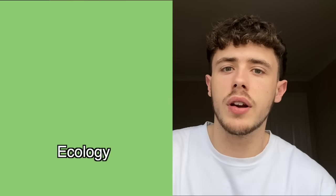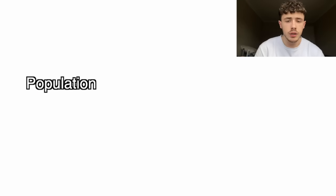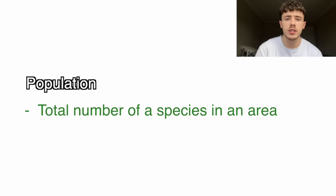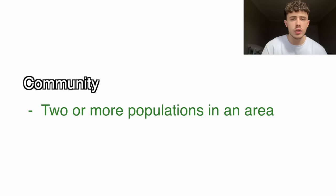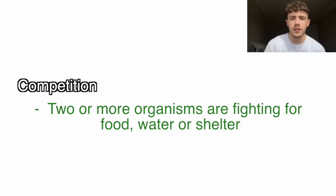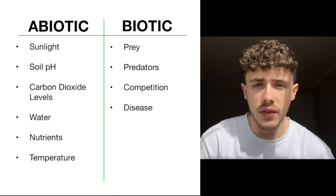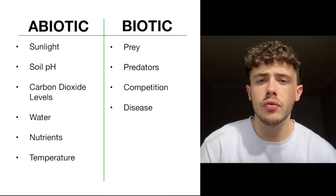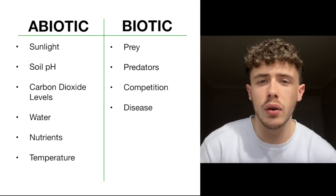On to our final topic, topic number three: ecology. Most of ecology is just definitions that you need to be familiar with. Once you know these definitions, take them to past papers and other questions to make sure you can answer them. Population is the total number of a species in a certain area. If you have two or more populations within the same area, that is called a community. Competition arises when two or more organisms are fighting for resources — this could be prey, food, water, or shelter. The things that organisms compete for can be split into two categories: abiotic and biotic factors. Here are some examples of each, and I would recommend trying to remember as many as you can because they do come up a lot in exams.